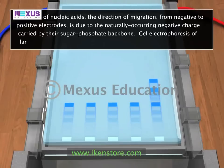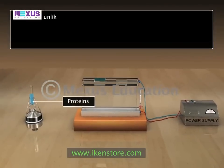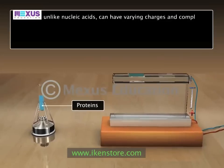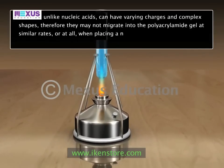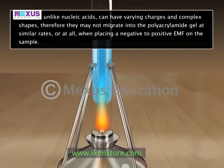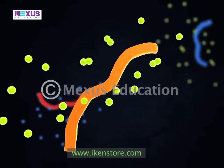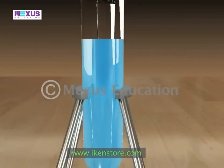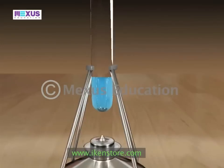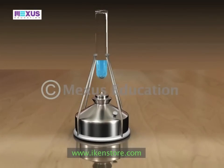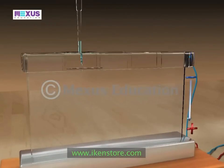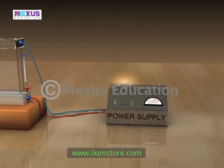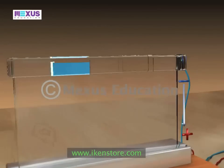Gel electrophoresis for large DNA or RNA is usually done by agarose gel electrophoresis. Proteins, unlike nucleic acids, can have varying charges and complex shapes, so they may not migrate into the polyacrylamide gel at similar rates. Proteins are therefore denatured in the presence of a detergent such as sodium dodecyl sulfate, which coats the protein with a negative charge. Since denatured proteins act like long rods, the rate at which the resulting SDS-coated proteins migrate in the gel is relative only to their size and not their charge or shape.